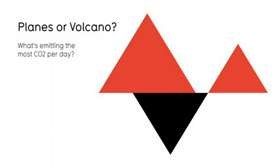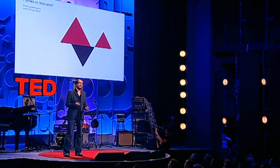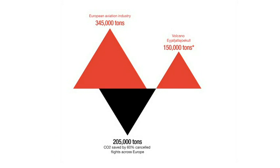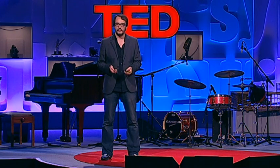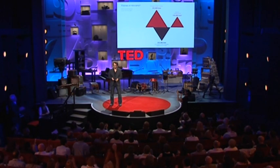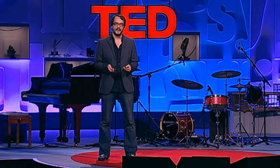Like this one: the recent Icelandic volcano — which was emitting the most CO2, the grounded planes or the volcano? We look at the data and see: the volcano emitted 150,000 tons. The grounded planes would have emitted 345,000 if they were in the sky. So essentially, we had our first carbon-neutral volcano. And that is beautiful. Thank you.